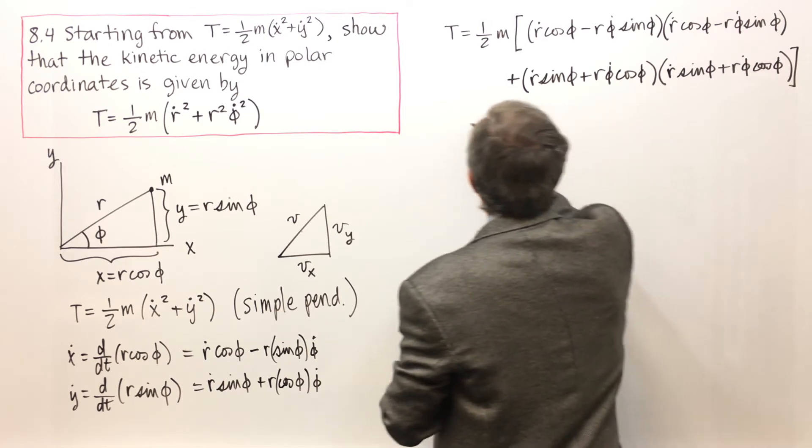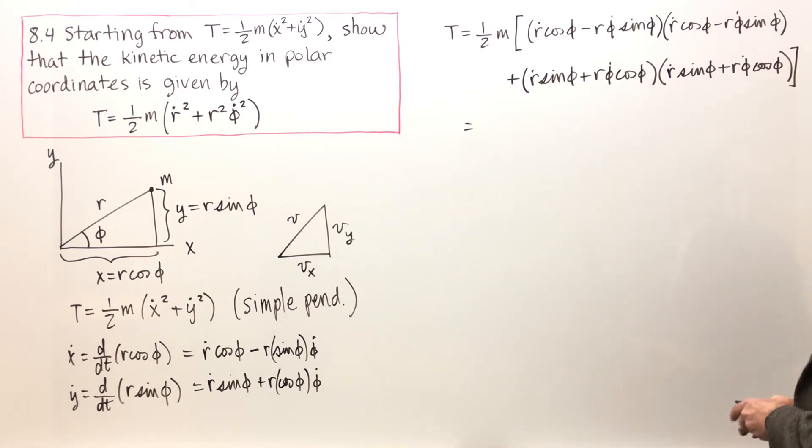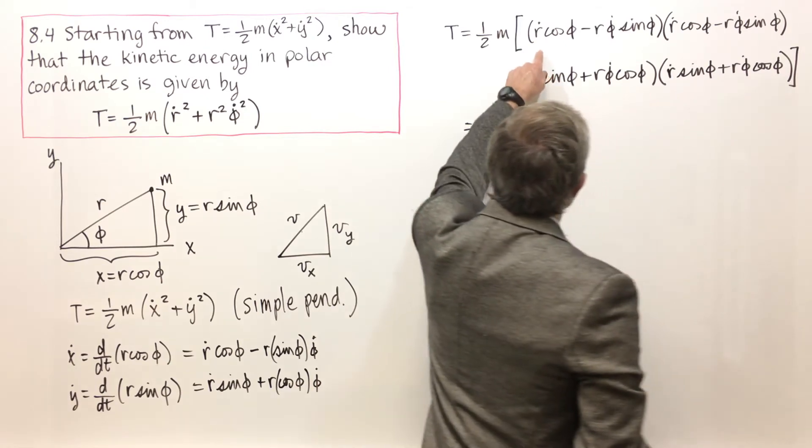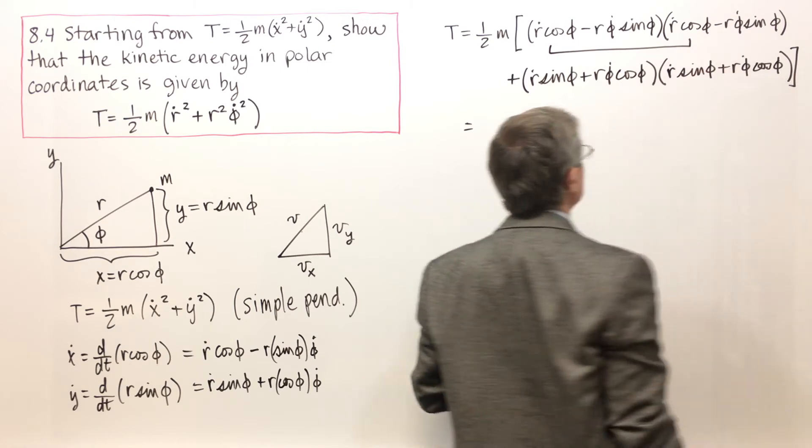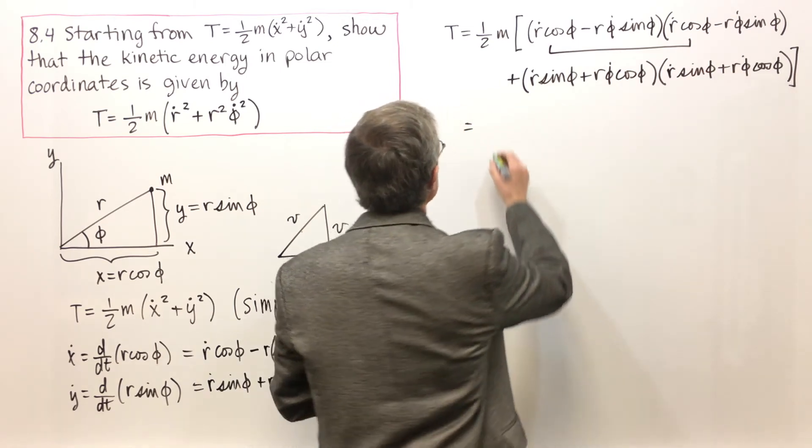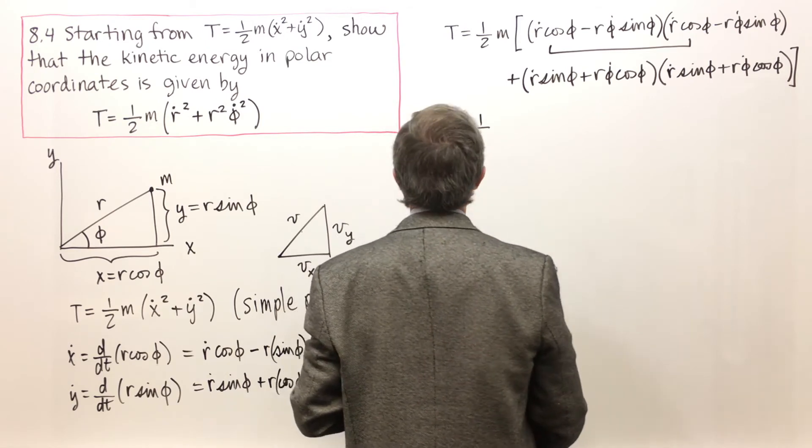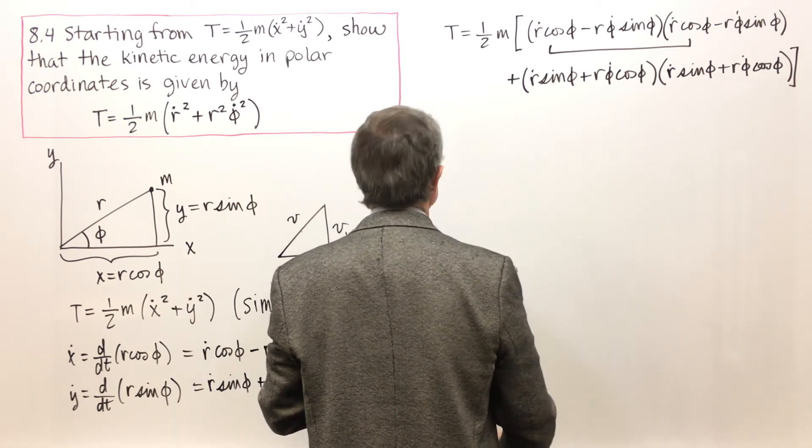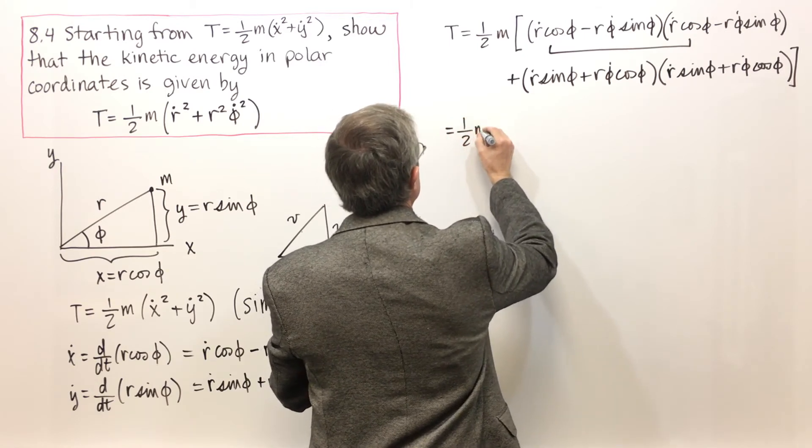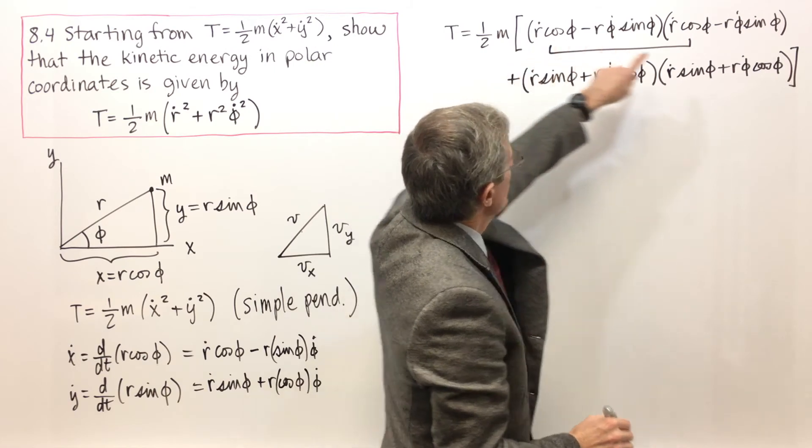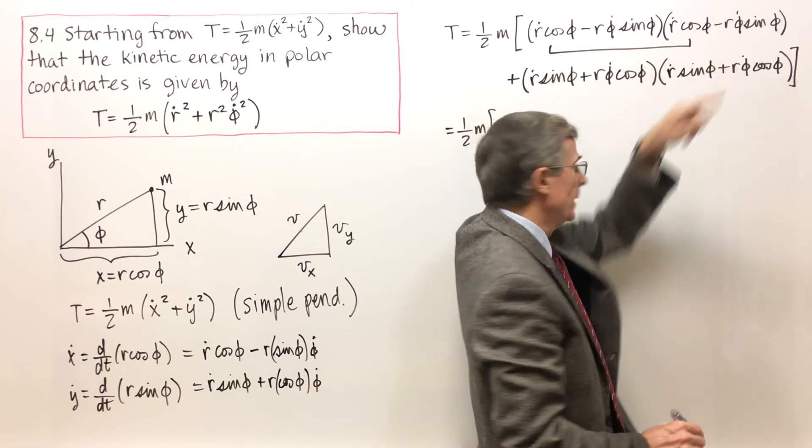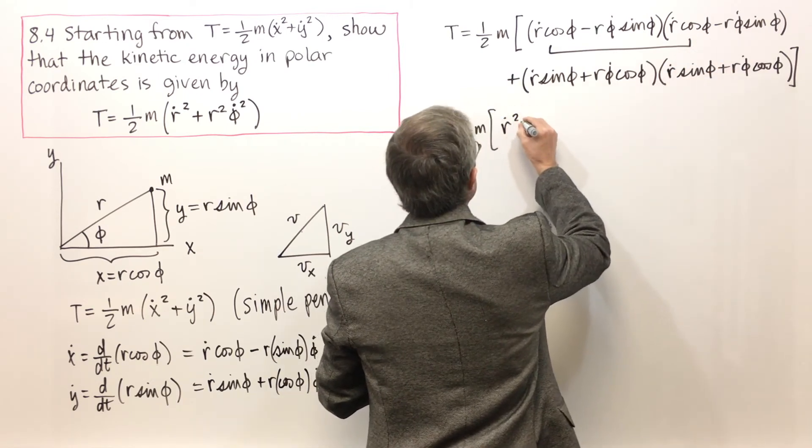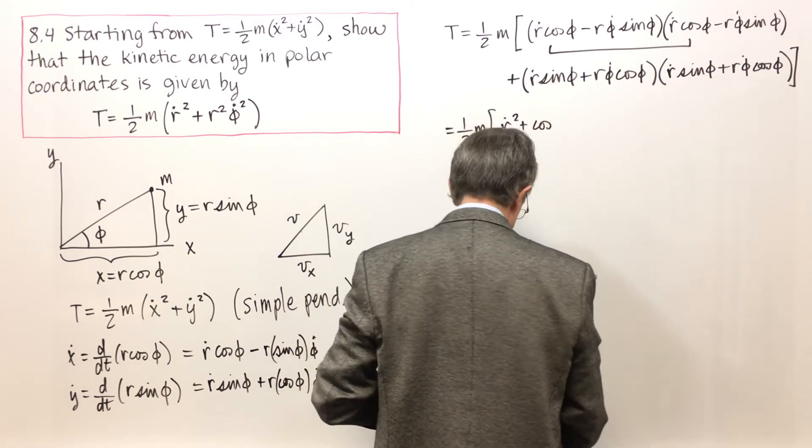Well, that looks like a mess. Let's look at some particular terms. This term times that term. I'm going to make myself a little more space. That term times that term: r dot squared times cosine squared phi times cosine squared phi. Let me now consider that term times that term. That'll give me r dot squared sine squared phi.